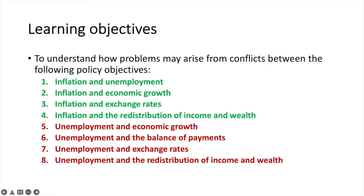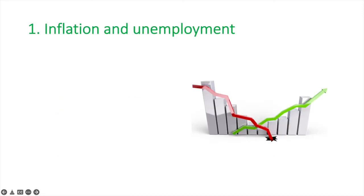In this video we'll explore the relationship and potential conflicts between policy objectives related to unemployment, inflation, economic growth, exchange rates, the balance of payments, and the redistribution of income and wealth. As we look at each potential conflict, I'll discuss the issues involved and then raise further points to consider.